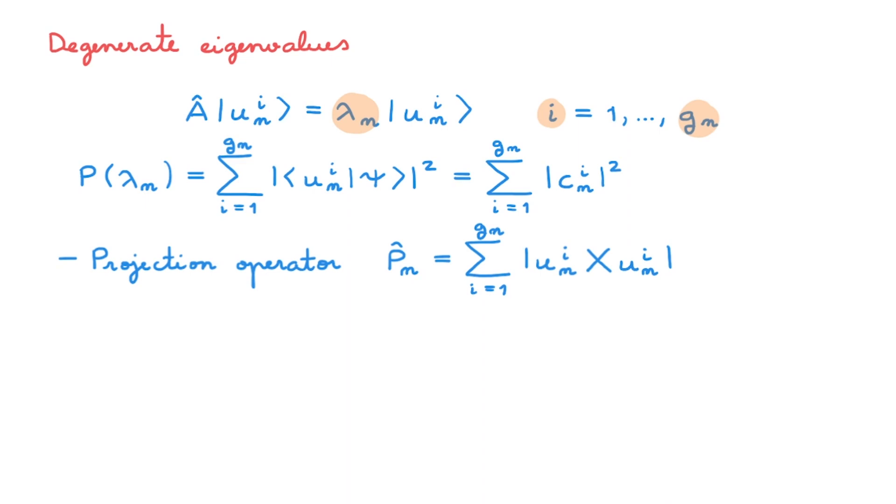In the videos on measurements we also learned that we can rewrite this expression by using the projection operator P n that projects onto the g n-dimensional subspace spanned by the eigenvalue lambda n. What we can do now is we can start from the state psi of the system and then construct the state psi n by acting with the projector P n on psi. Once we've done this we show in the video on measurements that the probability P lambda n is equal to the norm of psi n. In turn this can be written as psi P n dagger P n psi, and then using the fact that P n is Hermitian we get P n squared, and using the fact that it is also idempotent we get P n. Overall we can write this expression as the expectation value of P n in state psi.